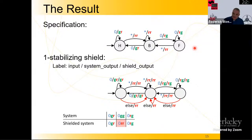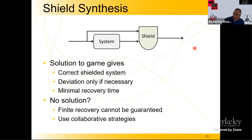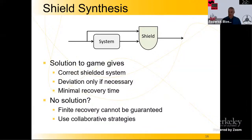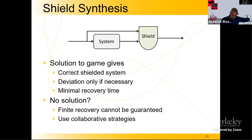So the main idea: the system may be as complicated as possible, you want to change outputs only if necessary and as little as possible. A shield may not exist — the synthesis answer may be 'not realizable,' for instance if you cannot always guarantee finite recovery time. Then you'd have to think of collaborative strategies. But let me show you some examples in the next five minutes.